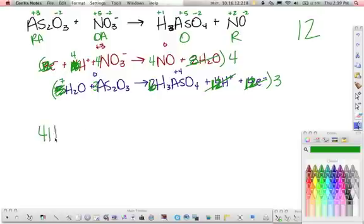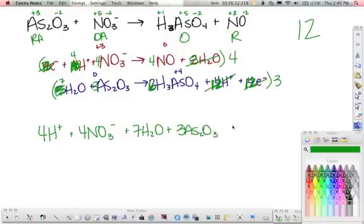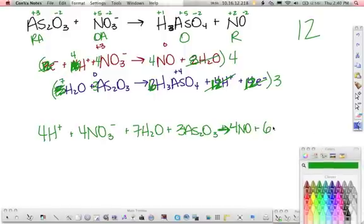Four hydrogens plus four nitrates - I bet you at one point it still kind of is nitric acid right here - plus seven waters plus three As2O3s. Plus, let's see, we got four NOs. Not plus, arrow. Four NO and six, get this out of the way, arsenic acids. There you go. That one's balanced. Double check your charges, make sure they all cancel out, and you're good to go.